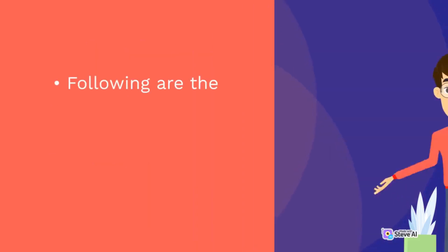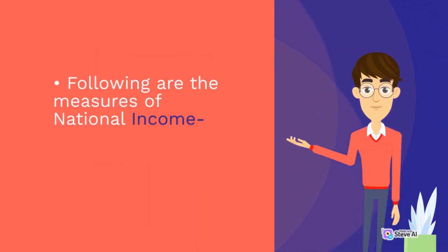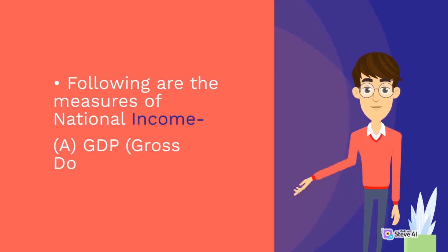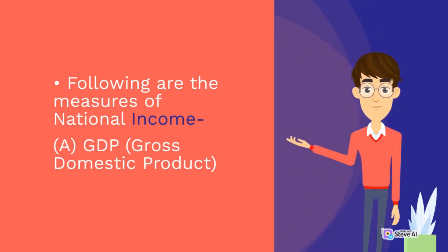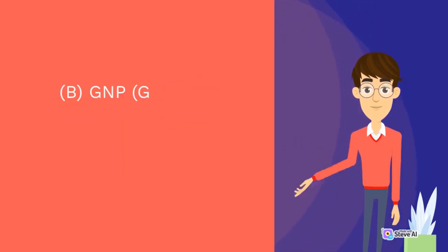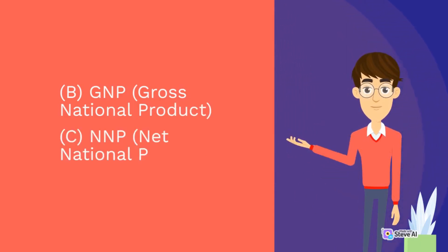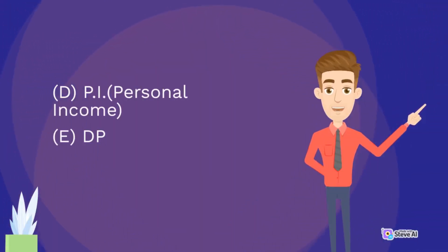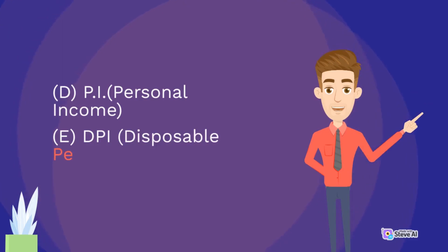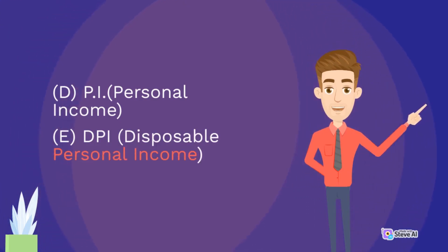Following are the measures of national income: A. GDP – Gross Domestic Product, B. GNP – Gross National Product, C. NNP – Net National Product, D. PI – Personal Income, E. Disposable Personal Income.